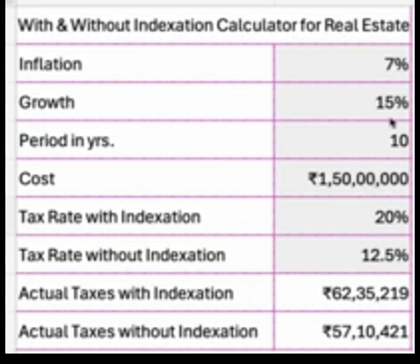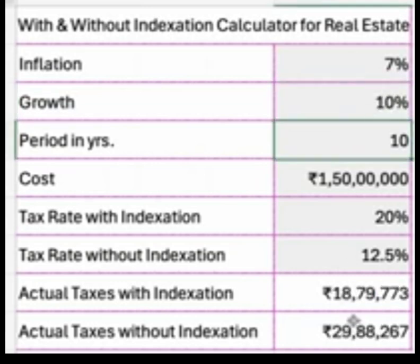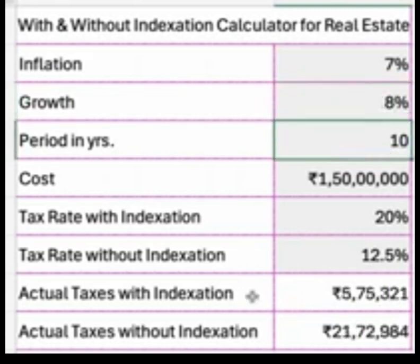However, I showed growth at 15% — where is real estate actually growing at 15%? A more realistic scenario would be 10% growth. At 10% growth, taxes without indexation are 29 lakh, whereas taxes with indexation under the earlier regime would have been 18,79,000. But even 10% is very high. At a more realistic 8% growth, the actual tax with indexation was only 5,75,000, whereas without indexation today it would cost you 21 lakh — even though the tax rate dropped from 20% to 12.5%. This is why we have designed this calculator.